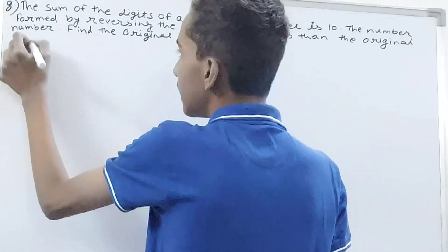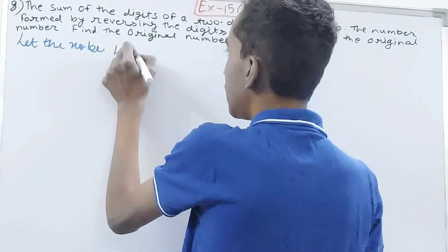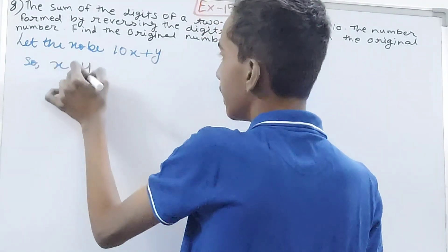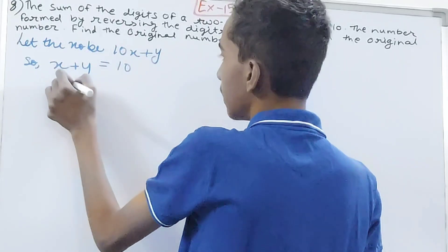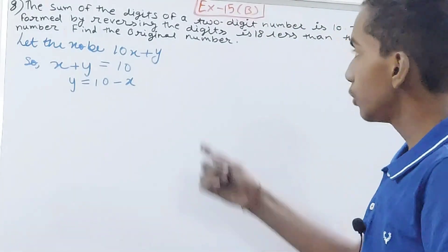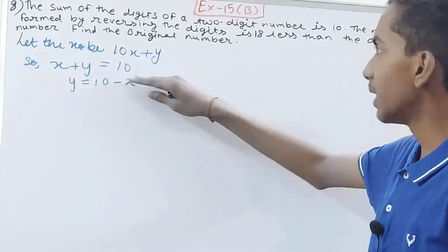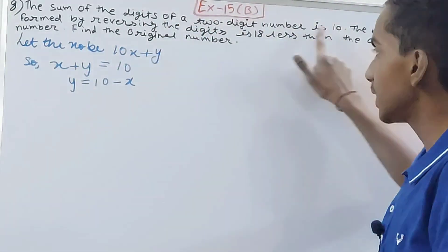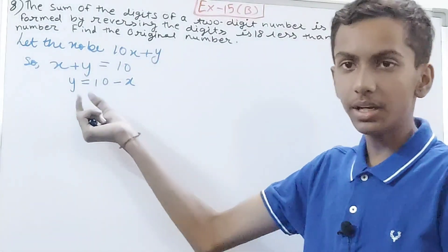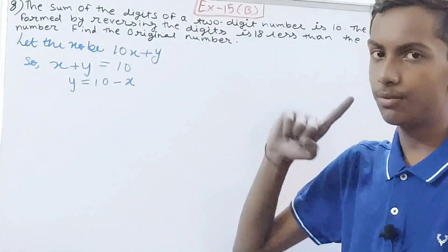Let the number be 10x + y. Since the sum of digits is 10, we have x + y = 10, which gives us y = 10 − x. The reason we do this is to express the number with only one variable — we'll replace y with (10 − x) throughout.